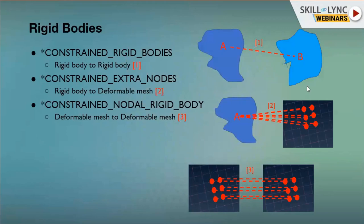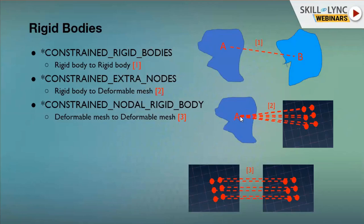There are three types of rigid body definitions: constrained rigid bodies, constrained extra nodes, and constrained nodal rigid body. For constrained rigid bodies, you assign MAT_RIGID to each part and just provide the part IDs to connect them without defining nodal rigid bodies. Constrained extra nodes can be used for rigid body or deformable mesh — you select the margin nodes and give the PID of the rigid part. Constrained nodal rigid body is the standard method usable for both meshes by defining a set of nodes from each part to act as rigid locally.